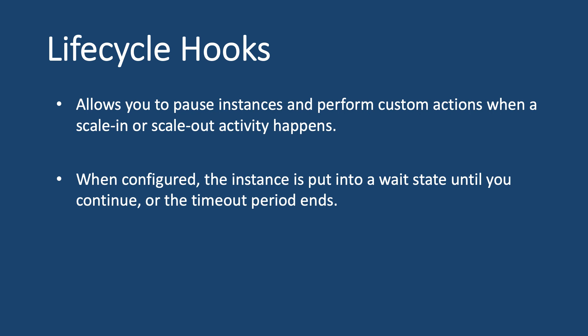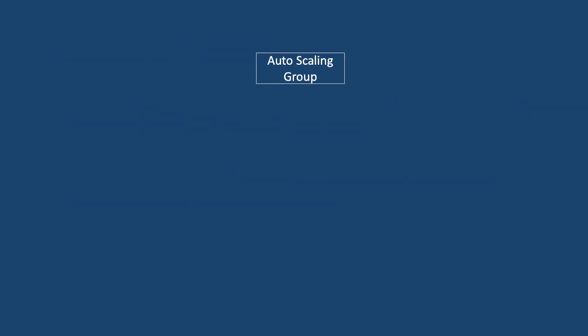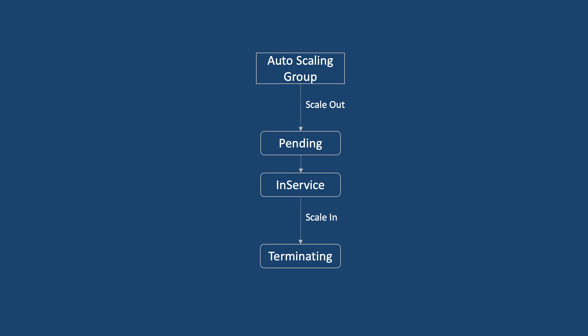Let's look at the workflow of an auto scaling group without lifecycle hooks. A scale out activity happens, meaning a new EC2 instance has been launched. The instance is first put into a pending state. Some checks are performed and then the instance moves into in-service. At this point the instance has started serving traffic. When a scale in event happens, the instance will first enter the terminating state, and then it enters the terminated state.